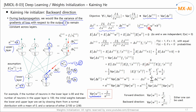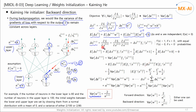Since S_{i+1} is Z_i W_i plus B_i, the partial derivative of S_{i+1} with respect to Z_i is W_i. The mean of delta Z_i can be written, and since delta S and W are independent, we can factor them. Since the mean of W is 0, the mean of delta Z_i is 0. Next, let's find delta S_{i+1}. By definition, delta S_{i+1} is the partial derivative of L with respect to S_{i+1}.